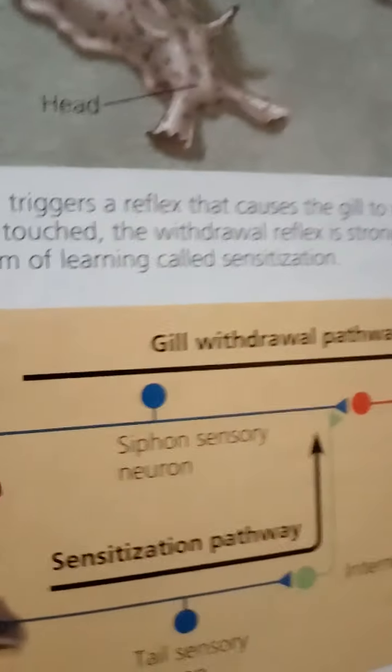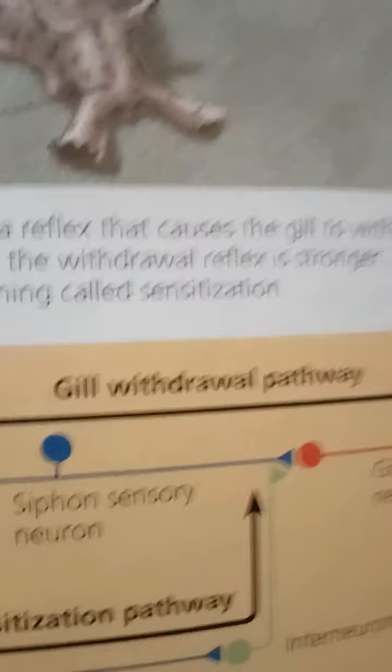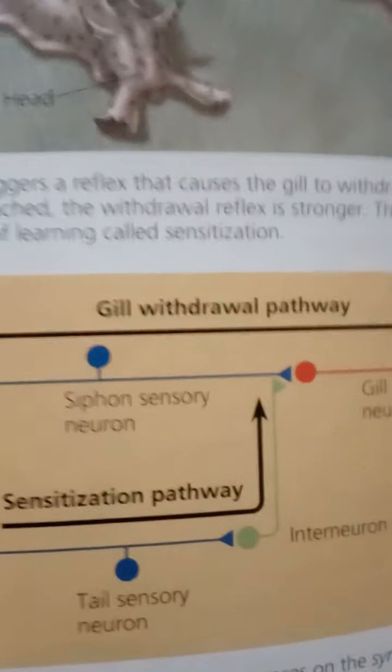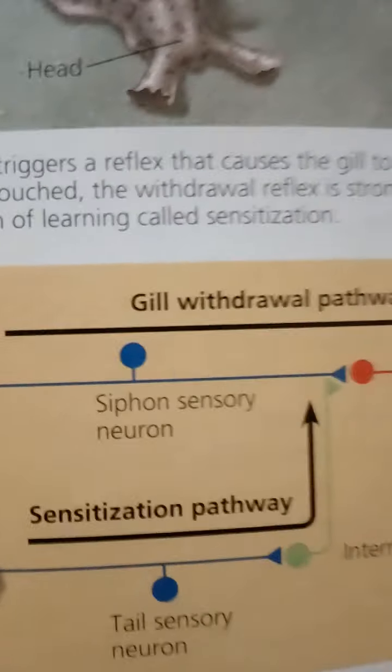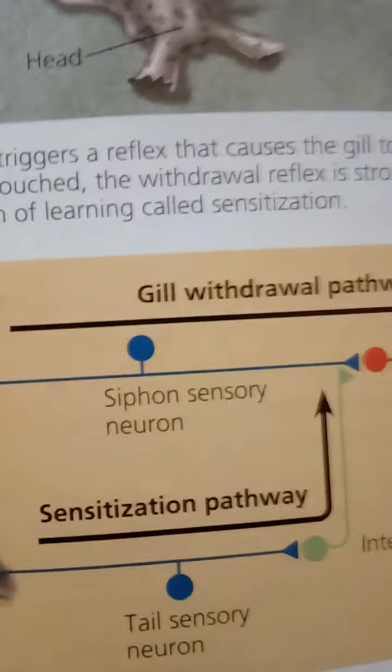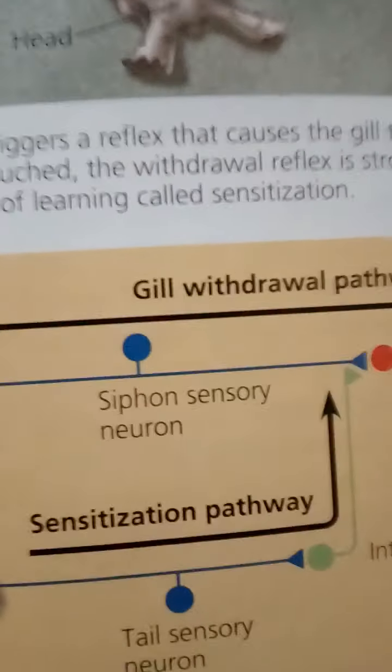Over the past few decades, however, neuroscientists have begun studying consciousness using brain imaging techniques such as fMRI. It is now possible to compare activity in the human brain during different states of consciousness, for example, before and after a person is aware of seeing an object.